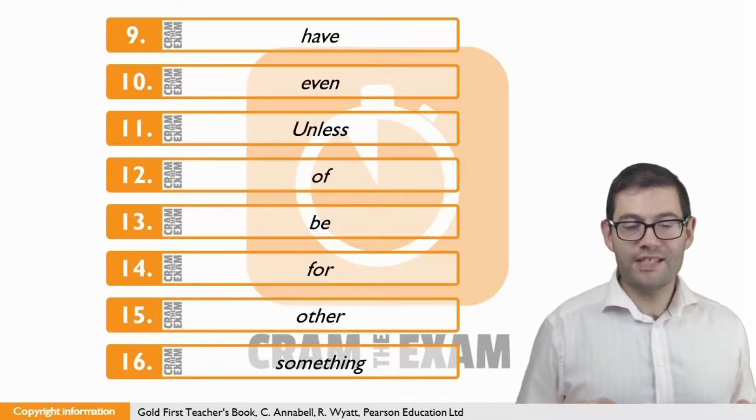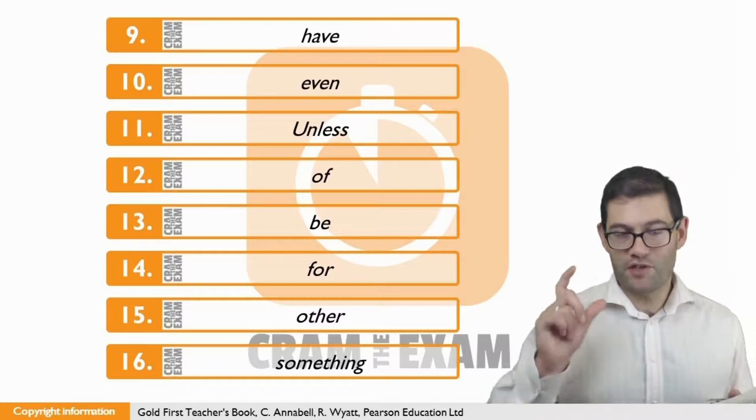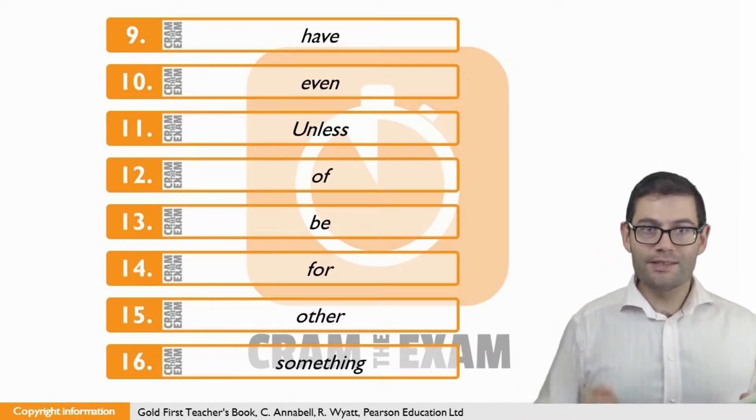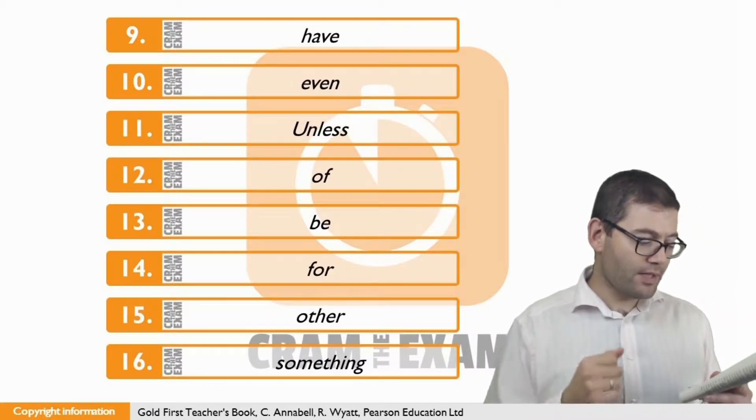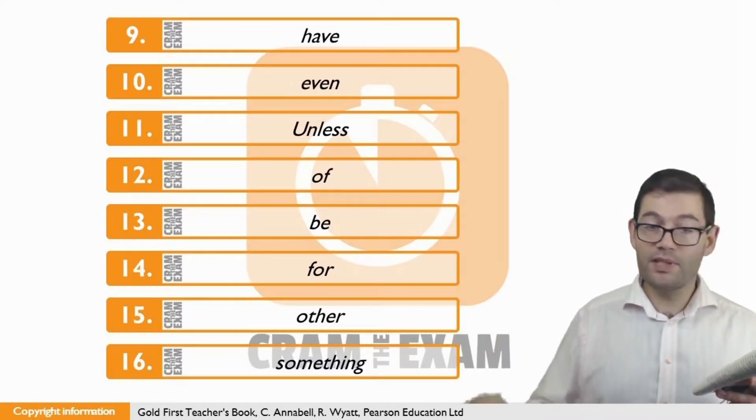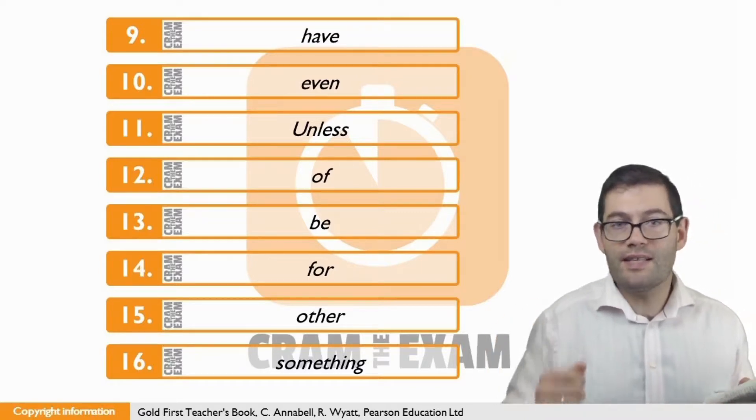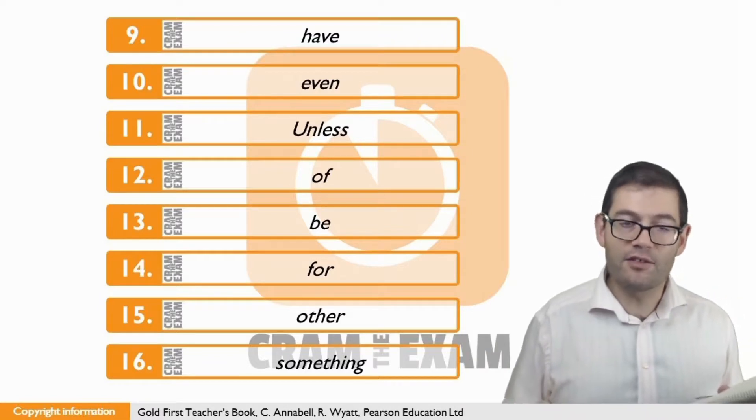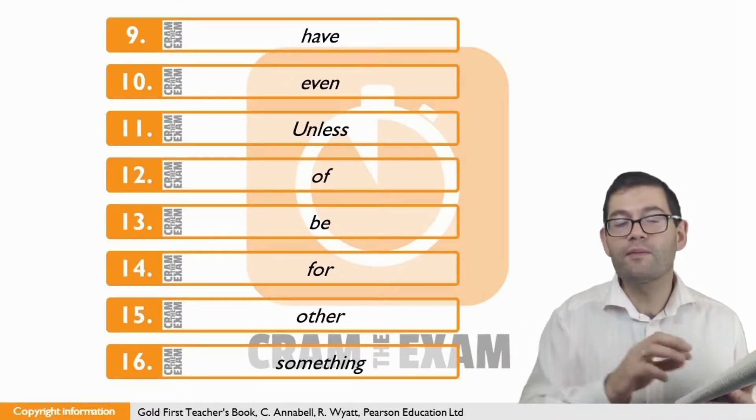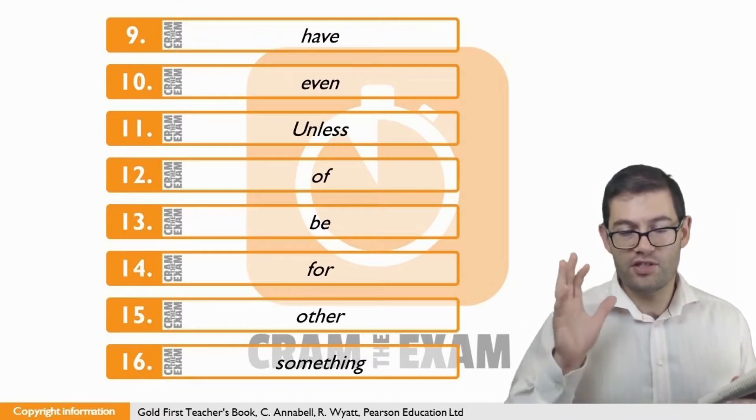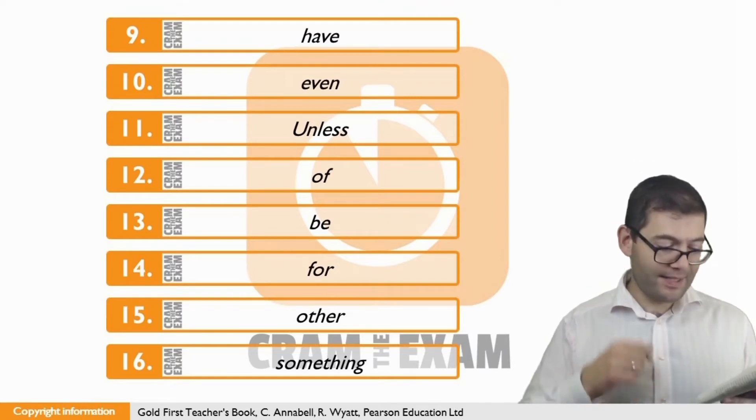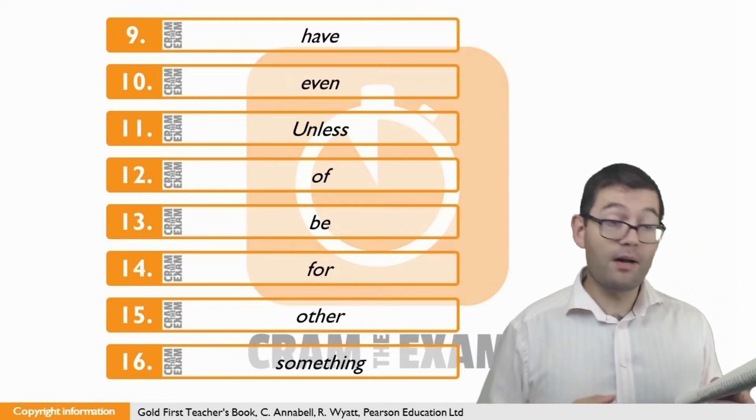For question sixteen, what we need here is a substitutive term to replace the term that we've just mentioned. In other words, talent. There are certain skills you can learn, but real talent is talent that people are born with, and it's possible to learn this. But we can't say talent is talent because, well, stylistically it's not fantastic, and for the purposes of this exercise, it's not a word that we would include. But we can use the substitutive form, and that substitutive form is something. Talent is something that people are born with.